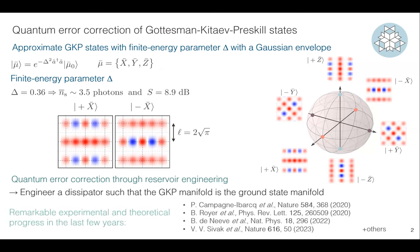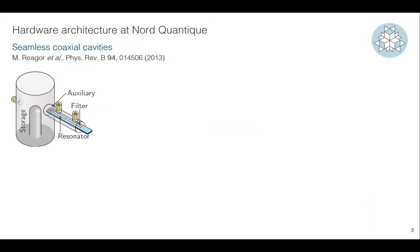What we want to do is perform quantum error correction on these states, and the idea is to use reservoir engineering. We will have a circuit that engineers a dissipator such that the GKP manifold is the ground state manifold. One reason to be excited about that is all the progress happening both experimentally and theoretically in the last few years on two platforms: superconducting circuits and also trapped ions.